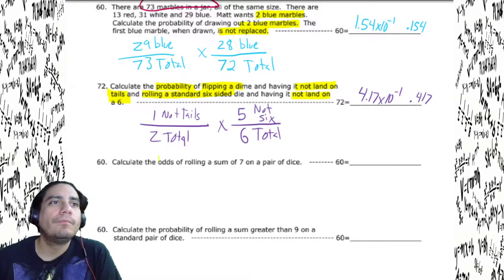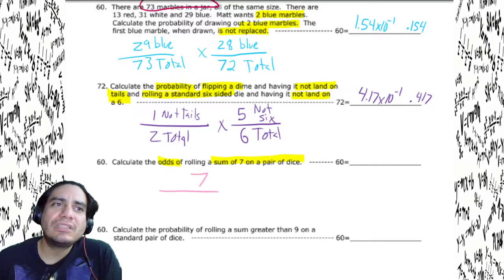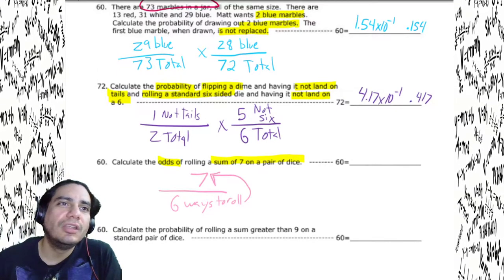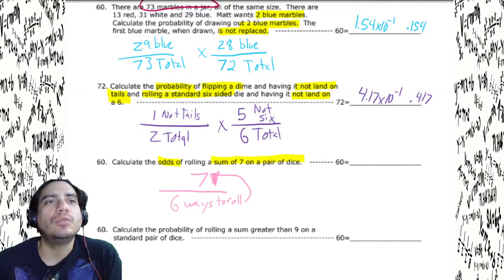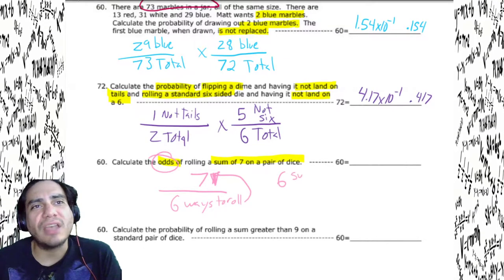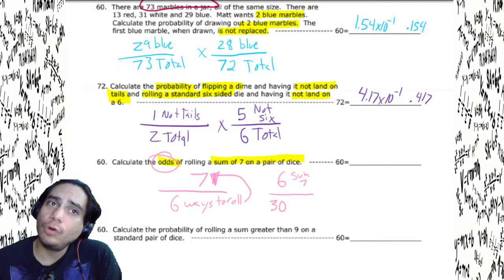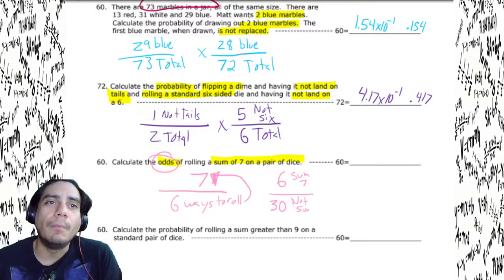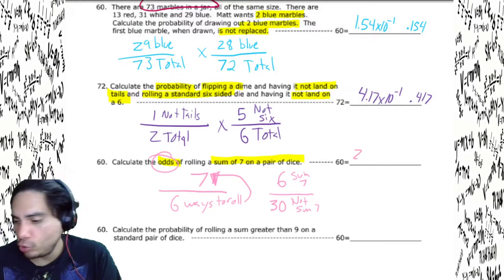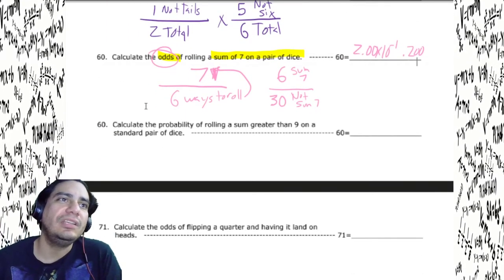Odds: sum of seven on a pair of dice. Seven is the key one — there are six ways to roll a seven. Since this is odds, we need how many do not give a sum of seven. There are 36 total, so 30 are not sum seven. Six divided by 30 gives us 2.00 times 10 to the negative one, or 0.200.